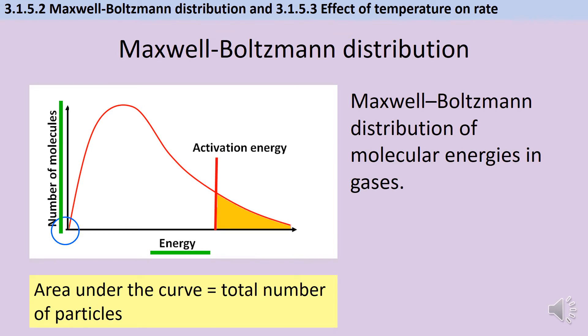The graph will always look like a slightly skewed normal distribution with a long tail or asymptote going to the right. The area under the curve represents the total number of particles, which is important when we start redrawing the graph to represent a change in conditions.